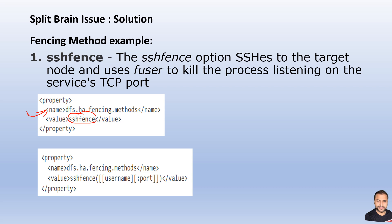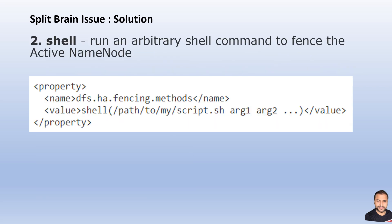So while the new name node takes over, the previous one is explicitly killed, preventing any overlap scenario. Another fencing method provided is the shell method, where you can provide the relative path of a script carrying custom logic to either explicitly kill that process or ensure it is no longer accessible from a command perspective. These are some of the fencing mechanisms provided by Hadoop 2.